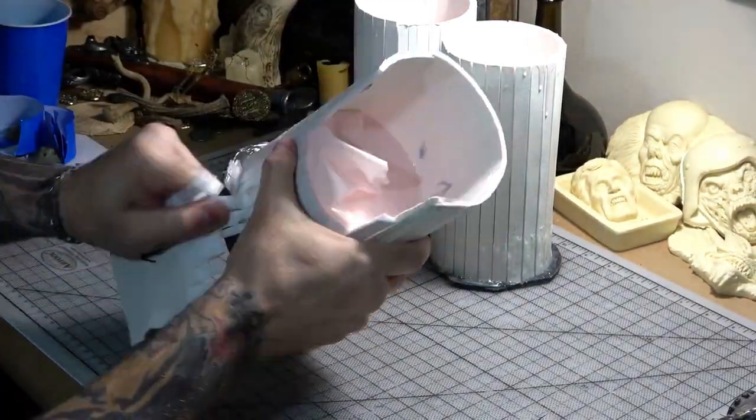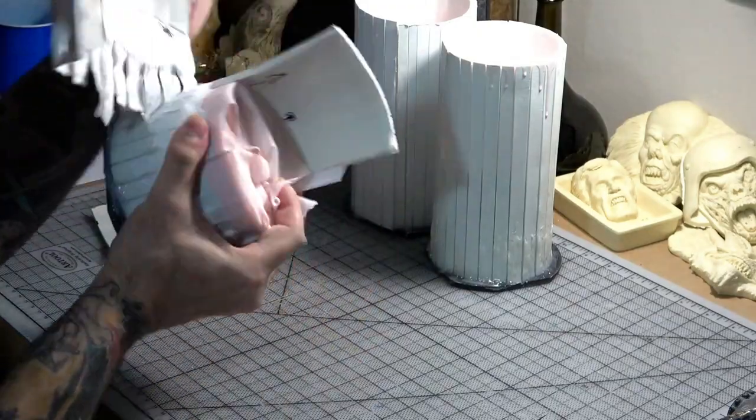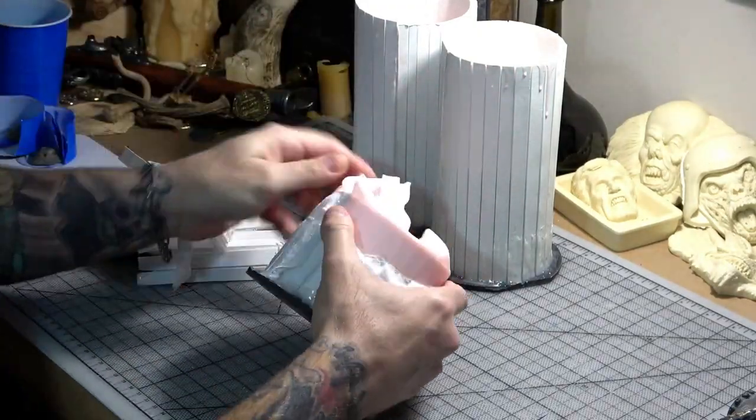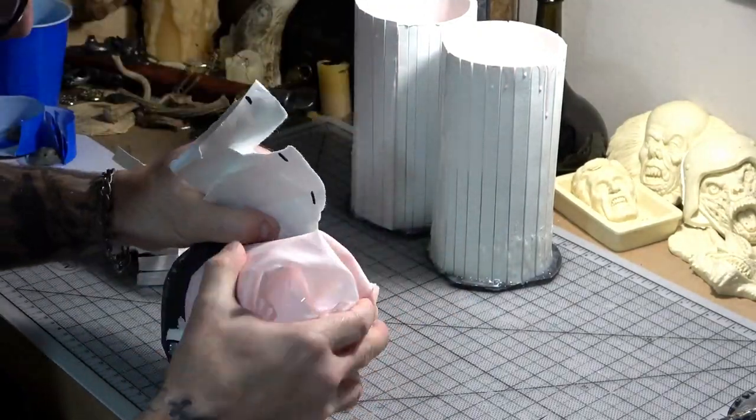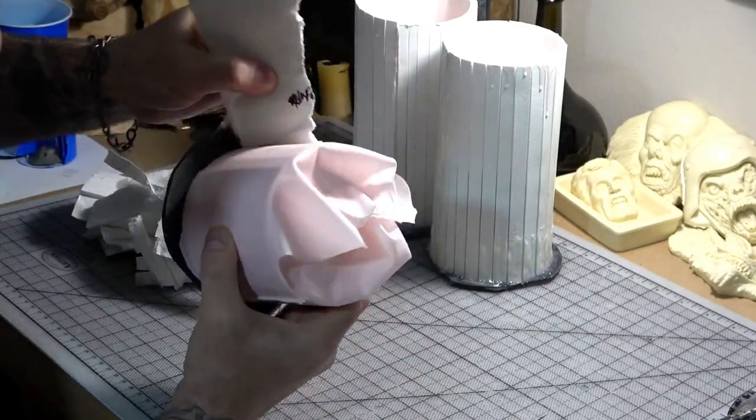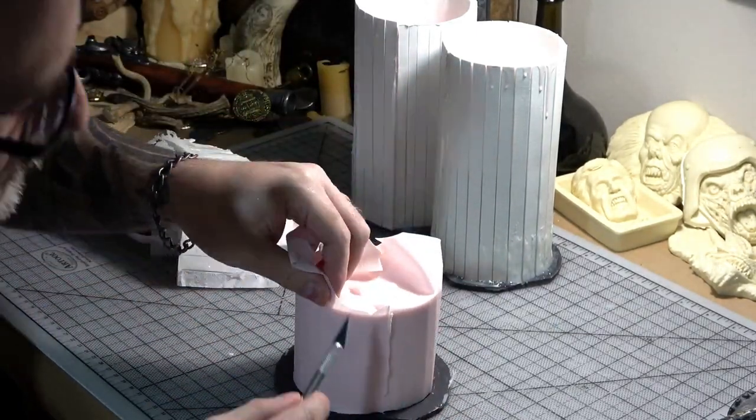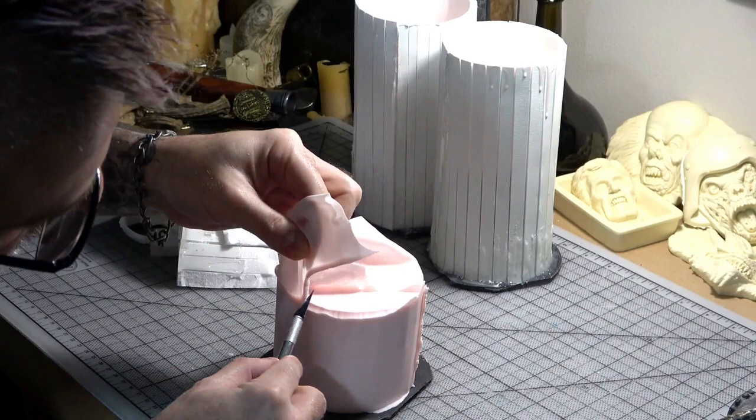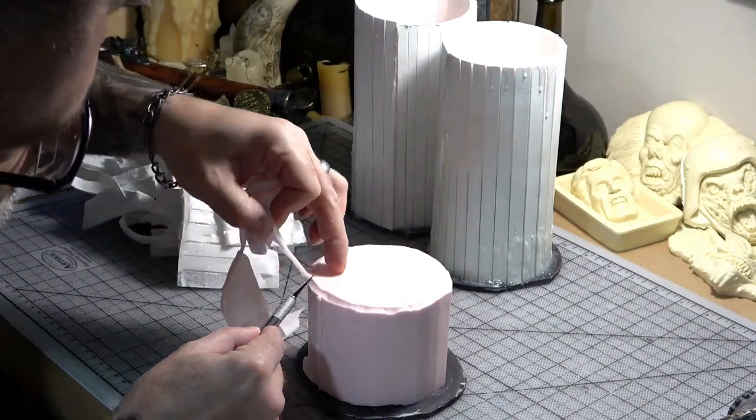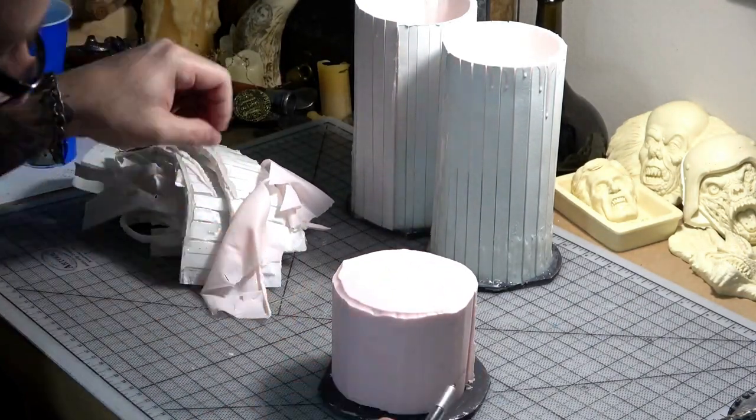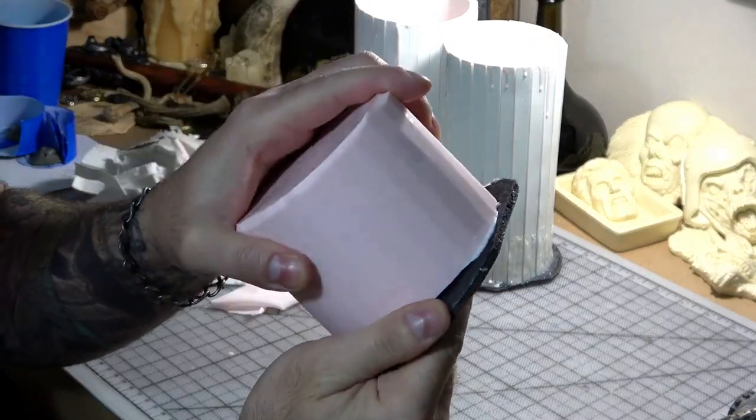I first rip off the walls all the way around. Then I trim the extra silicone off the top and down the seam. Then I pop off the base.